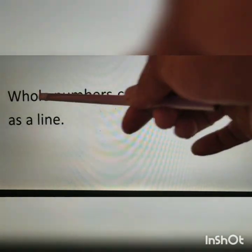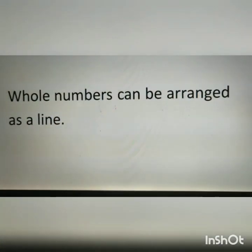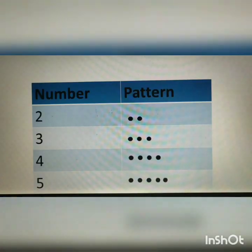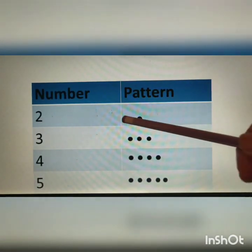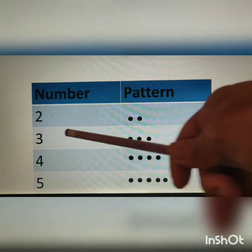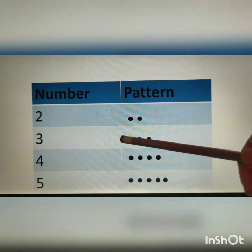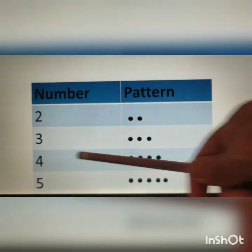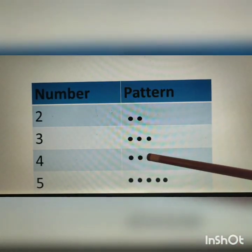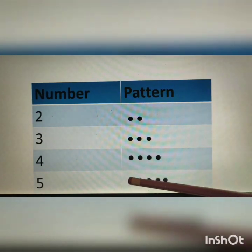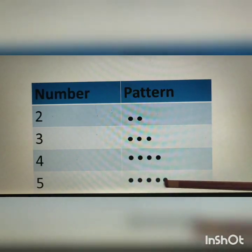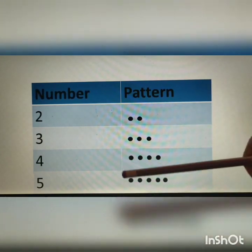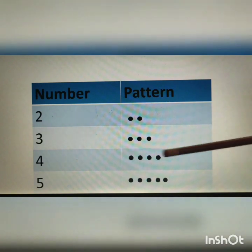Whole numbers can be arranged as a line. Let us see some examples. Here number 2 is represented as a line using 2 dots. Number 3 uses 3 dots, represented as a line. Number 4 uses 4 dots, and number 5 uses 5 dots in the next line. So all of these are represented as lines using dots.